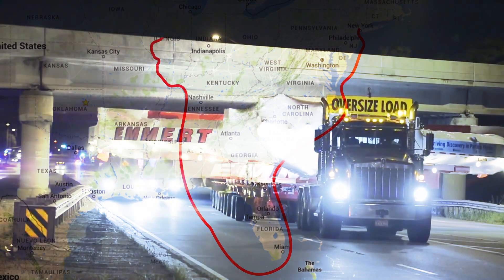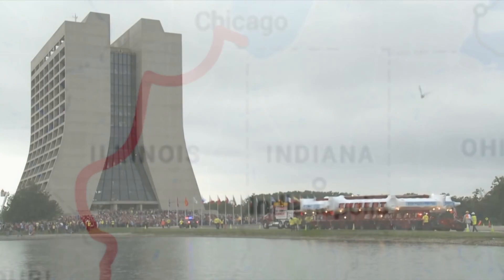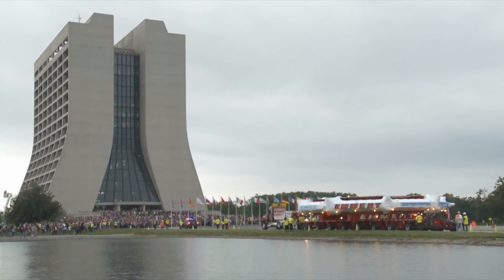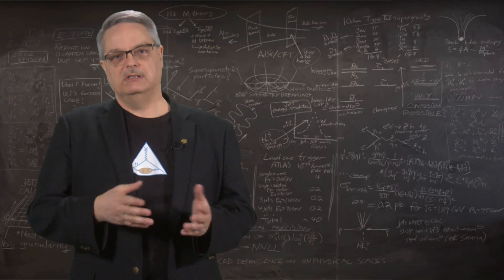After a trek of 3,200 miles, the G-2 detector arrived at Fermilab. Fermilab has more intense muon beams, so we can combine the existing precise detector and the more intense beams to get a better measurement.